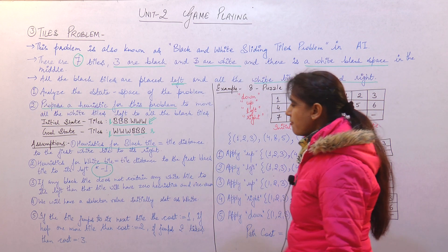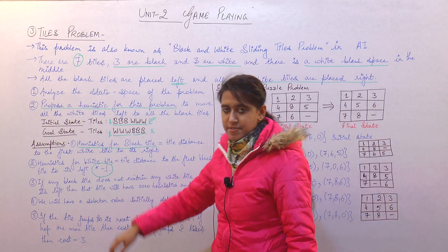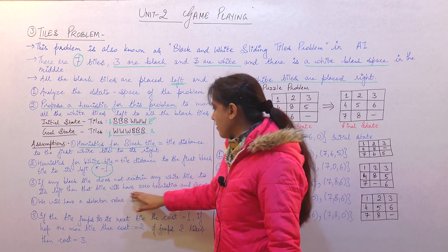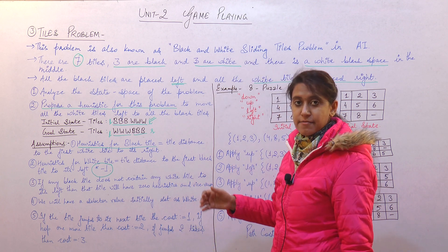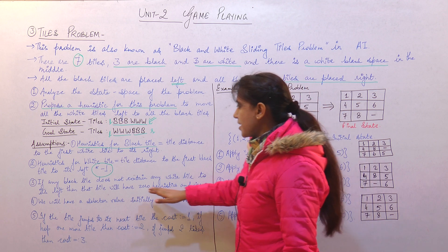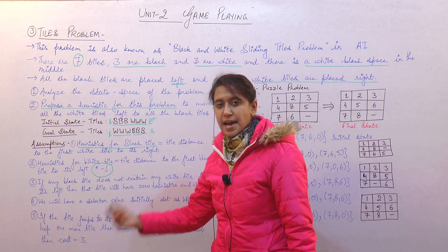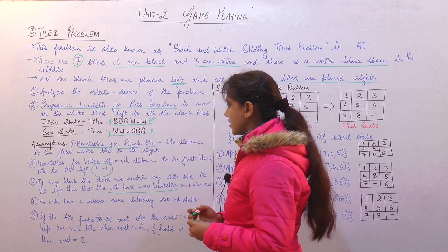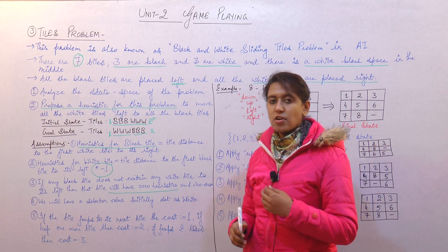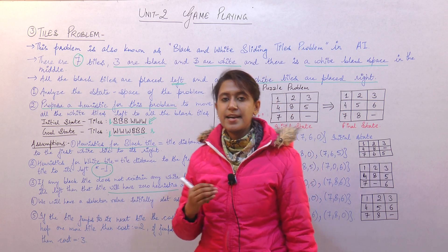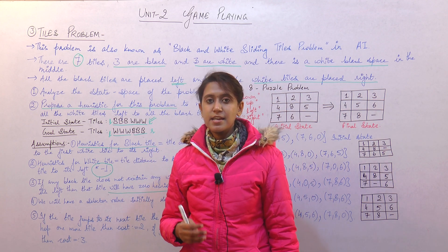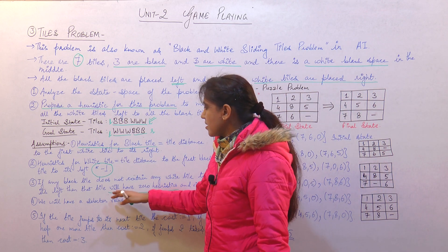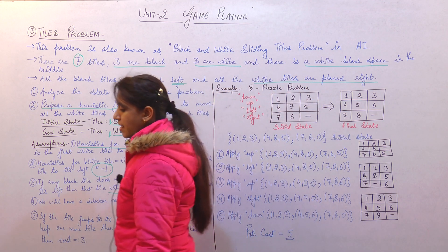The third assumption says that if any black tile does not contain any white tile to its left — or vice versa, if any white tile does not contain any black tile to its right — then that tile will have 0 heuristics. If a relevant tile is found, it will have some non-zero value.